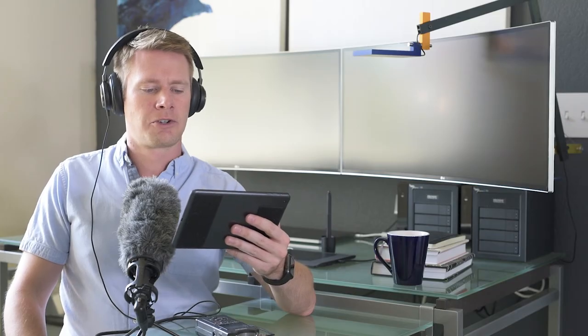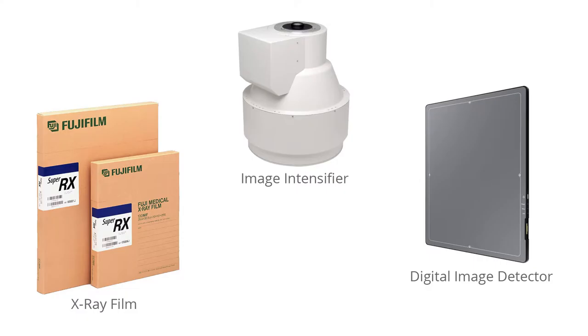The third type uses digital array detectors, which consist of thin film transistors that either indirectly detect light emitted from a scintillator material like cesium iodide, or directly capture the electrons produced when x-rays hit the detector.